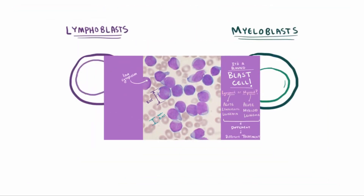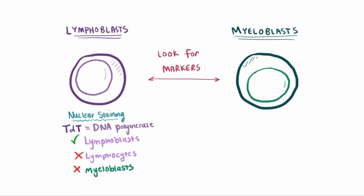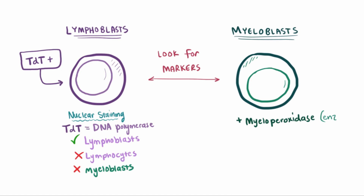To identify the cell type, we look for certain markers. For lymphoblasts, the most important marker is positive nuclear staining for TdT in the cell's nucleus. TdT is a DNA polymerase that's present only in the nucleus of lymphoblasts — not in the mature lymphocytes, and not in the myeloblasts. So if a nuclear stain comes out positive for TdT, we know it's a lymphoblast. For myeloblasts, the presence of myeloperoxidase, an enzyme, indicates that we've got a myeloid blast.